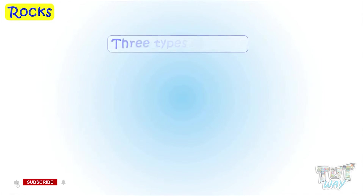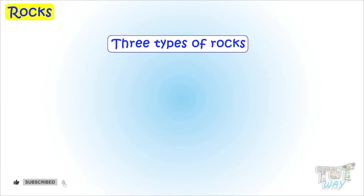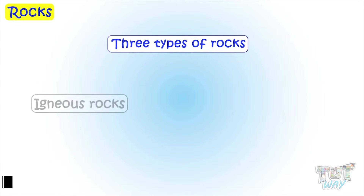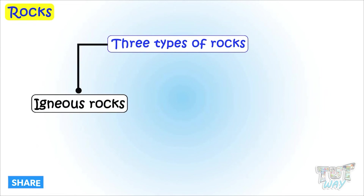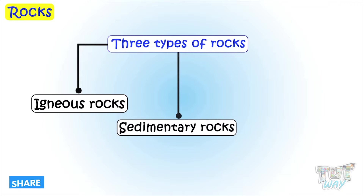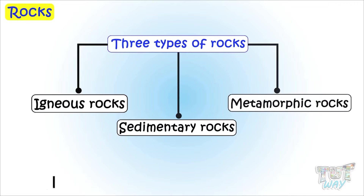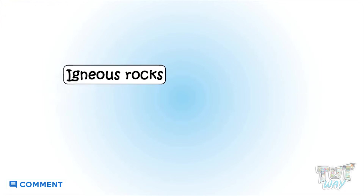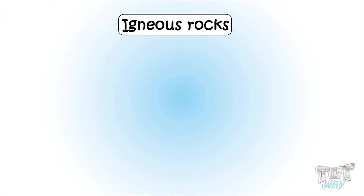Rocks can be categorized into three categories: igneous, sedimentary, and metamorphic. Now let's learn about each one by one.